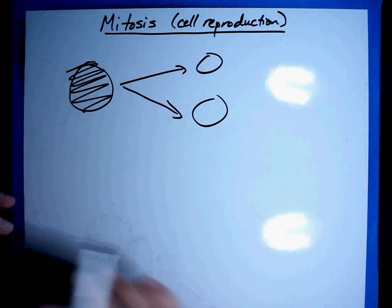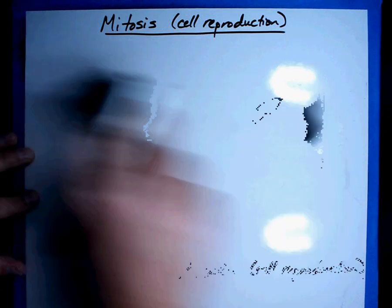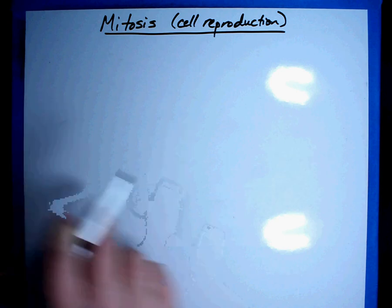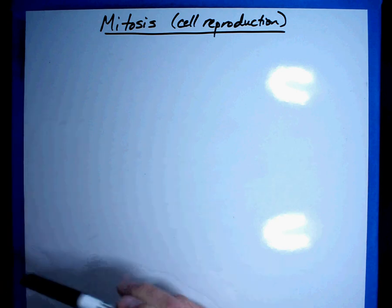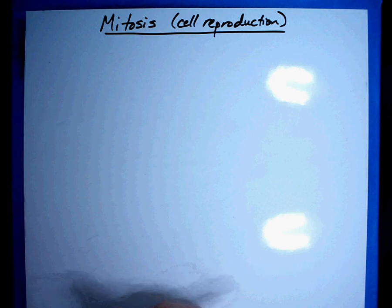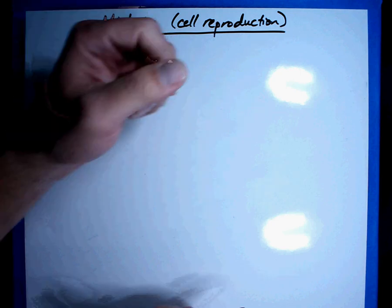Sometimes cells are damaged, such as when we sit out in the sun, we damage our cells and our body has to fix those cells. Sometimes it's for growth, where as a baby is growing, it has to produce more and more cells so that it grows or sometimes there's actually an error.